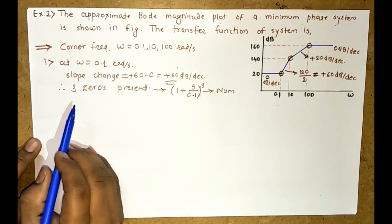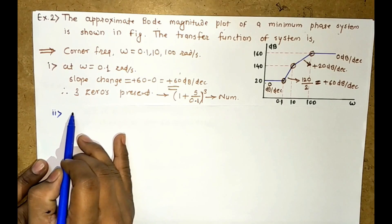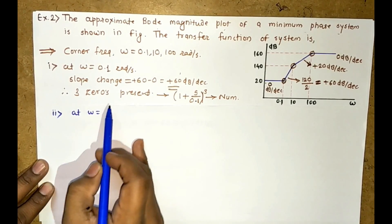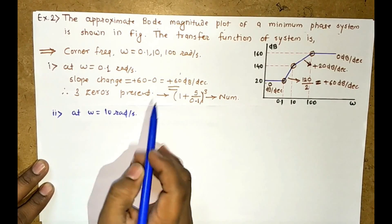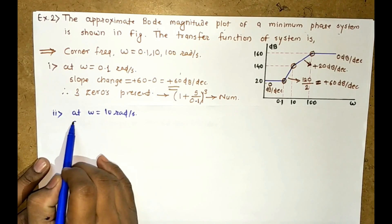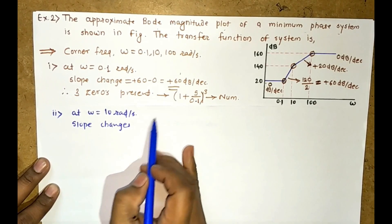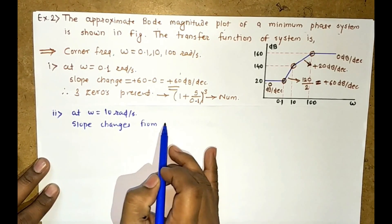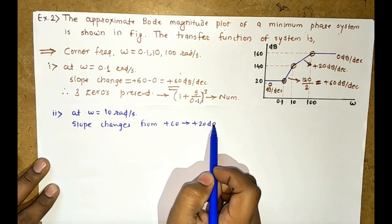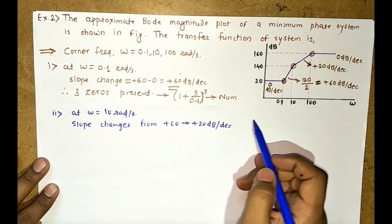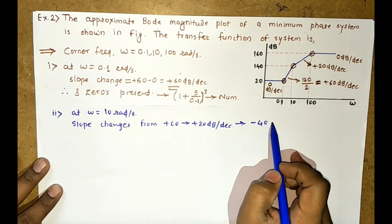At the second corner frequency, ω = 10 radian per second, the slope is changing from +60 dB per decade to +20 dB per decade, which means a minus 40 dB per decade slope is added here.